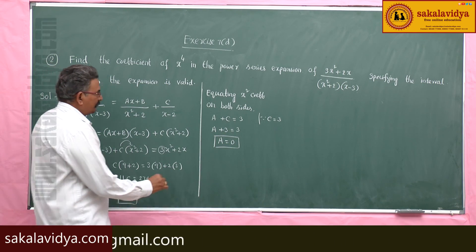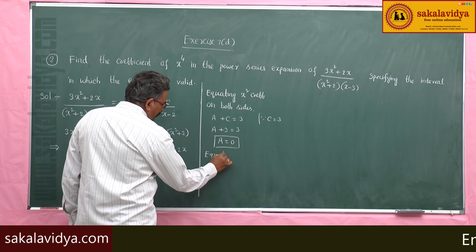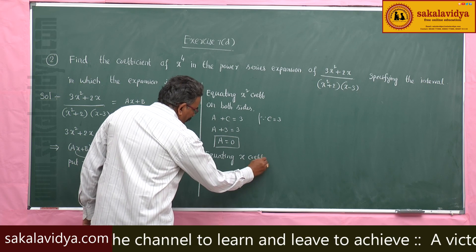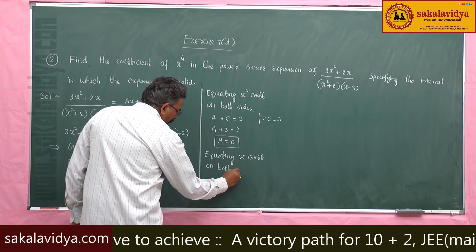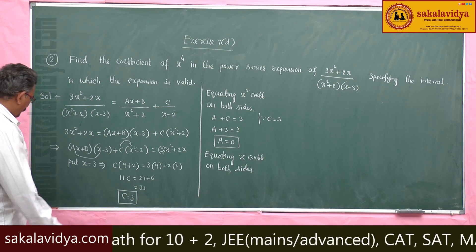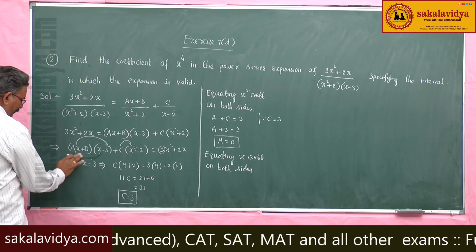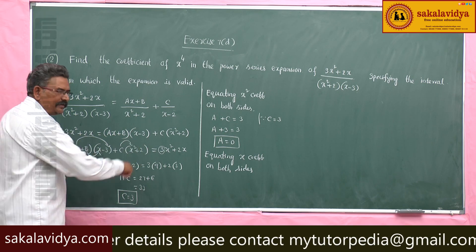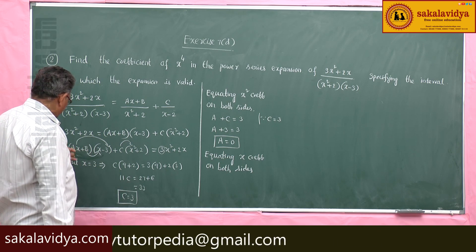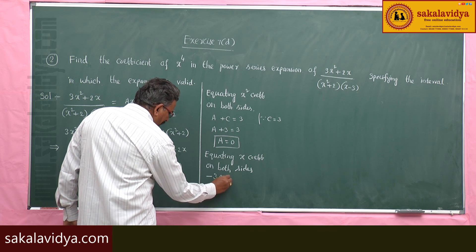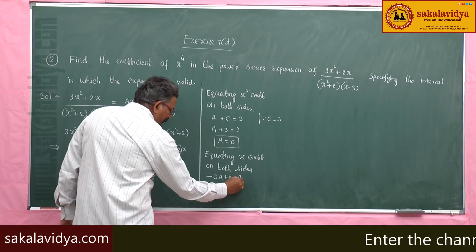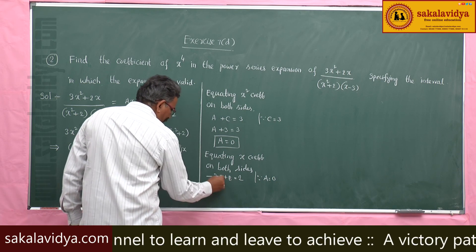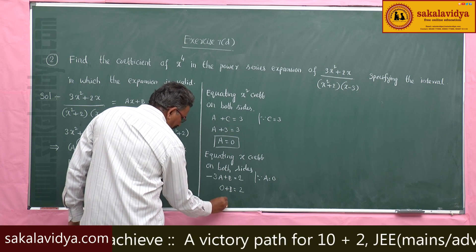Equating x coefficients on both sides: from (ax + b)(x - 3) we get -3a + b as the x coefficient. So -3a + b = 2. Since a = 0, we get 0 + b = 2, therefore b = 2.